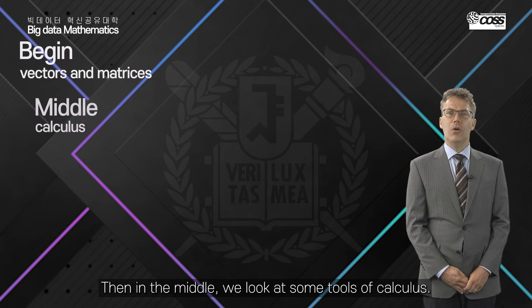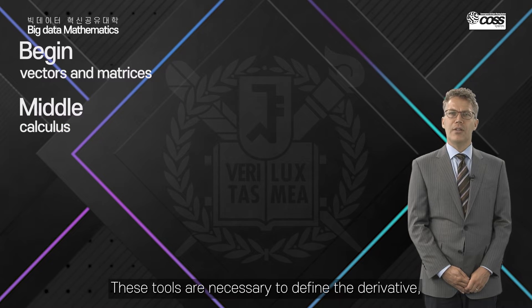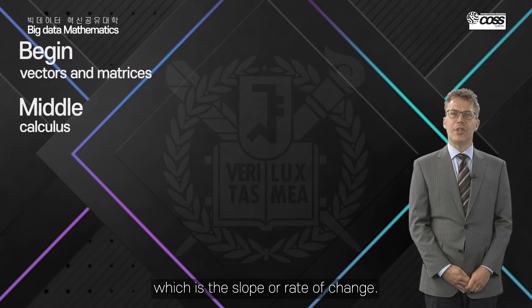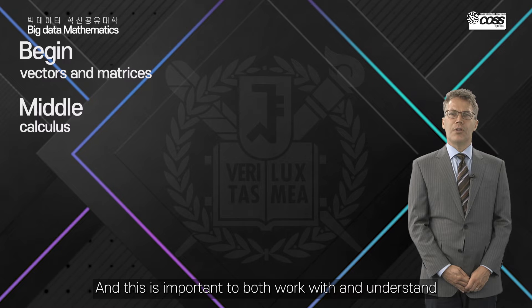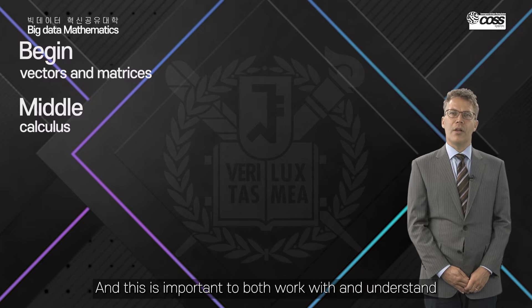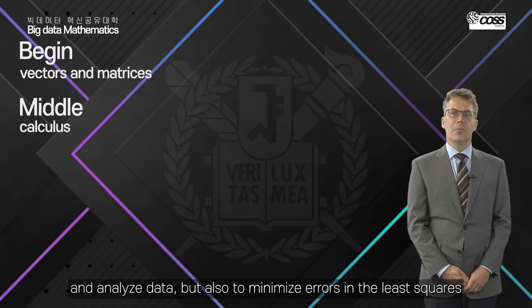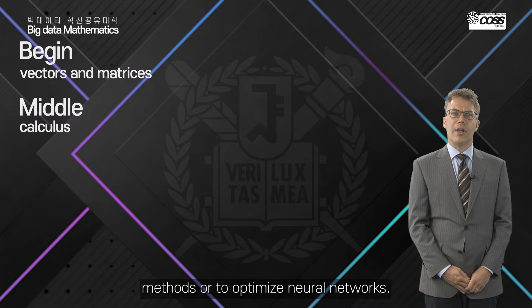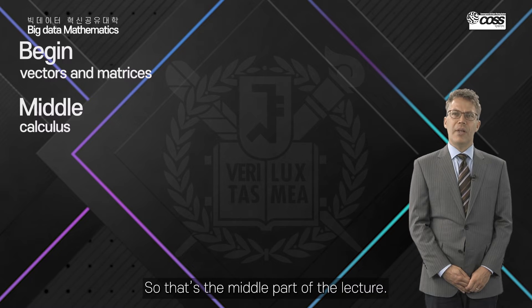Then in the middle we look at some tools of calculus. These tools are necessary to define the derivative which is the slope or rate of change. This is important to both work with and understand and analyze data but also to minimize errors in the least squares method or to optimize neural networks. So that's the middle part of the lecture.